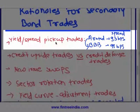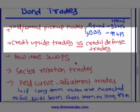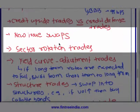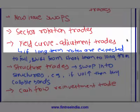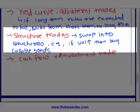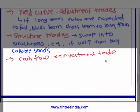What are the rationals for secondary bond trades? First, yield spread pickup trade — you migrate from a higher-rated bond to maybe a triple-B rated bond just to pick up some additional spread. Then: credit upside trade, credit defense trade, new issue swap, sector rotation, yield curve adjustment where you alter the duration, structure trade, and cash flow reinvestment rate.